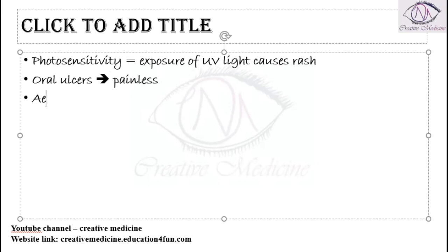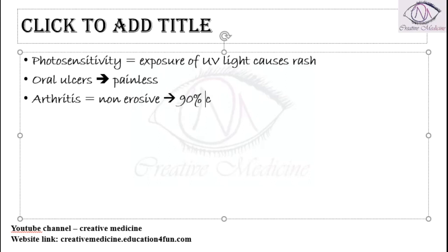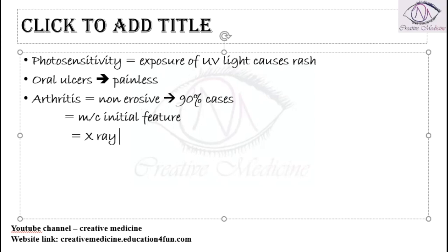The fifth criterion is the presence of arthritis. The patient develops non-erosive arthritis, which is present in almost 90% of cases and is the most common initial feature of SLE. If an x-ray is done, it will be found to be normal in this arthritis.